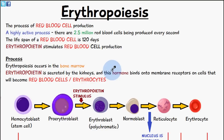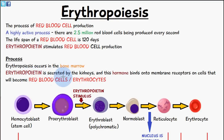The main hormone which stimulates red blood cell production is erythropoietin. This is the primary regulator of red blood cell production. Erythropoiesis occurs in the bone marrow, and erythropoietin is secreted by the kidneys.